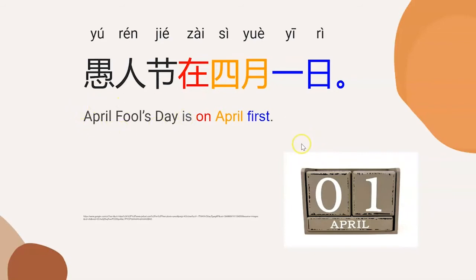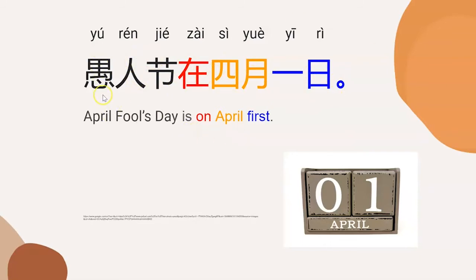If you want to tell people April Fools' Day is on April 1st, first say 愚人节 (yú rén jié), then say 四月一日 (sì yuè yī rì). So the whole sentence is 愚人节在四月一日 (yú rén jié zài sì yuè yī rì). 愚人节在四月一日. Now please say this sentence by yourself: 愚人节在四月一日.